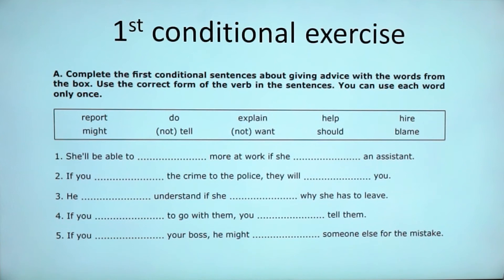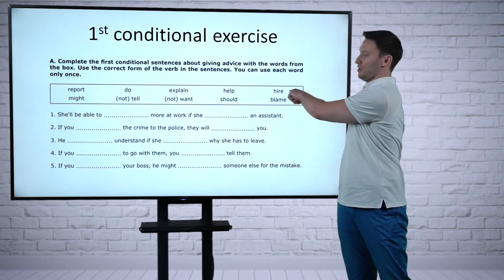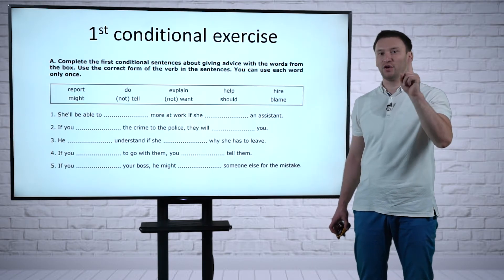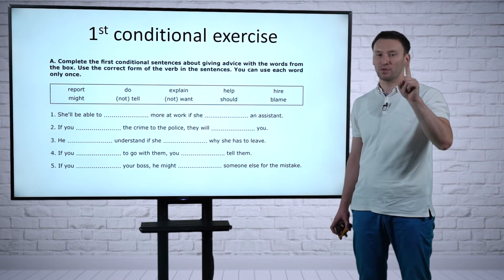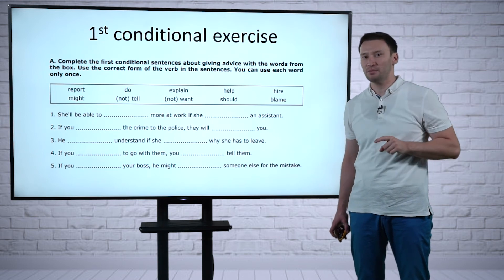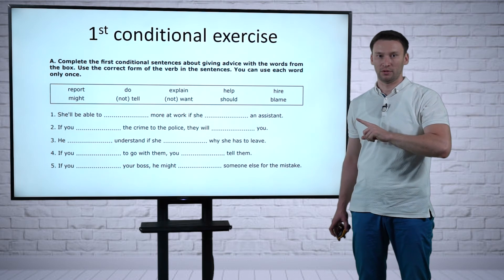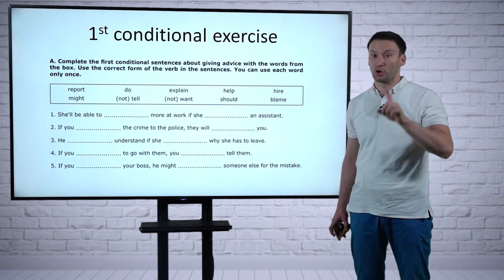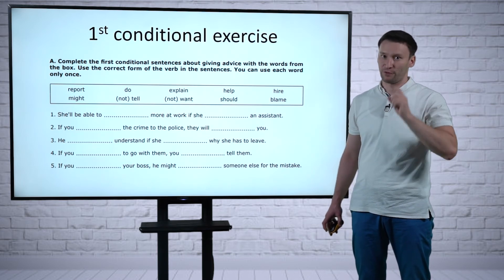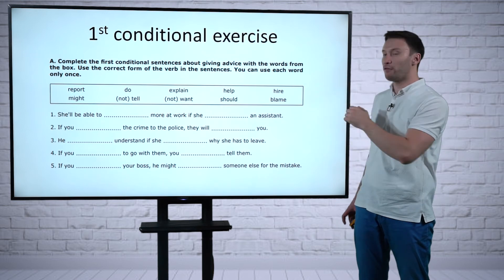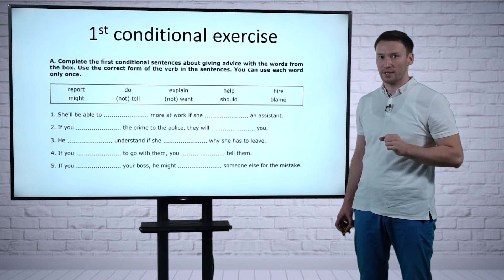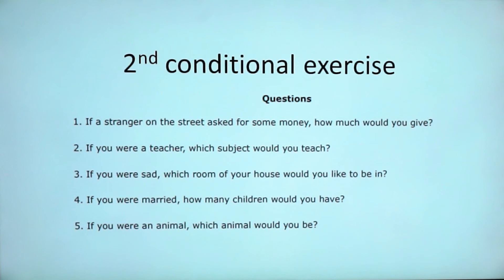Let's say the first conditional exercise. Now you're asked to complete the first conditional sentence with the words in the box by using the first conditional sentence. Remember the structure: if + present simple, then future simple. Remember to use or to omit the comma with if. Here we have five different sentences.